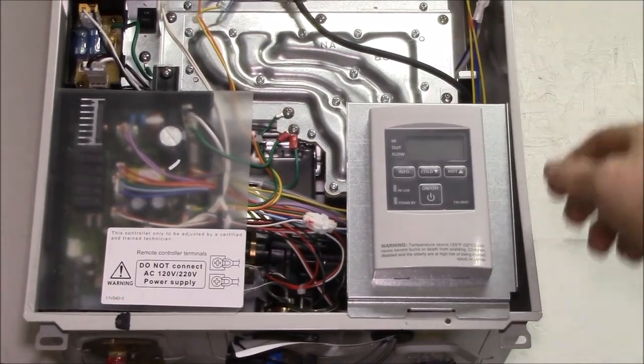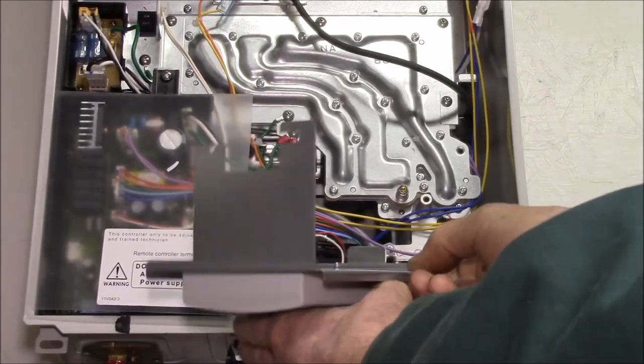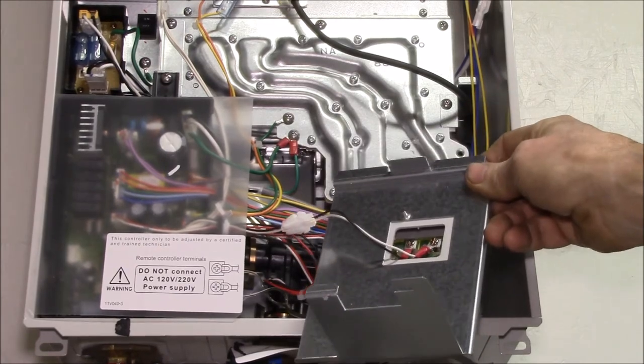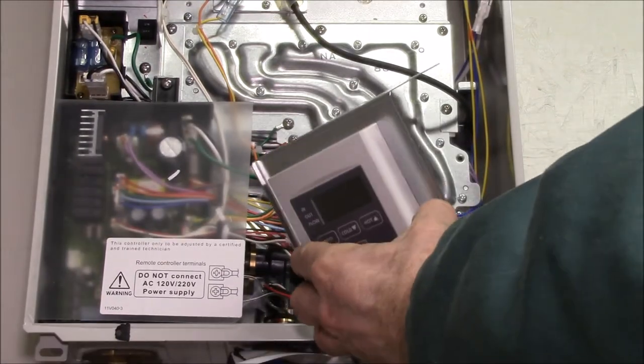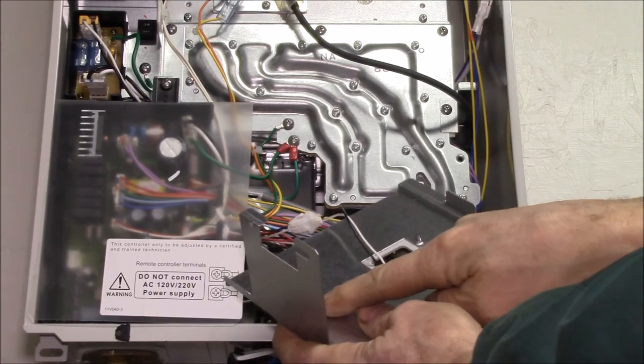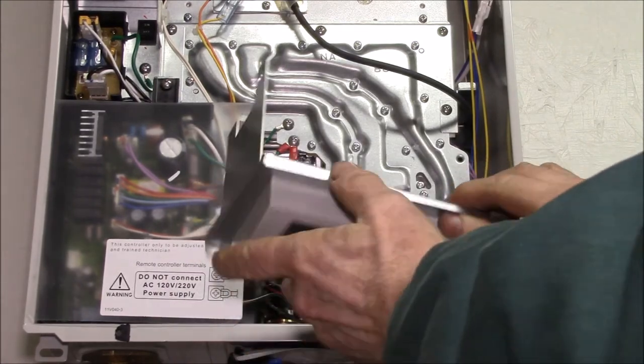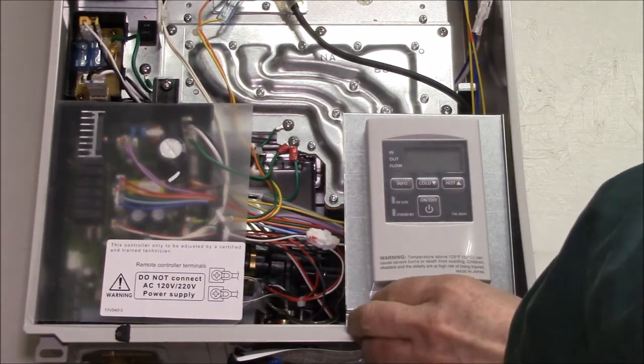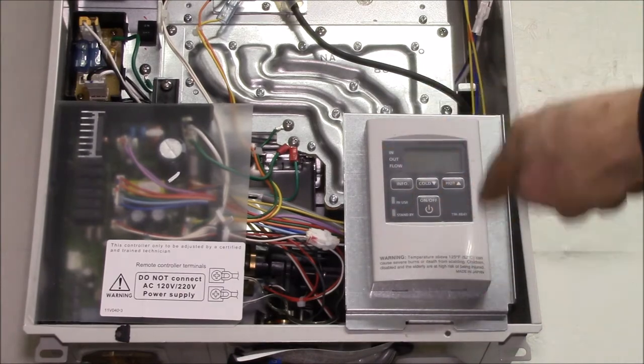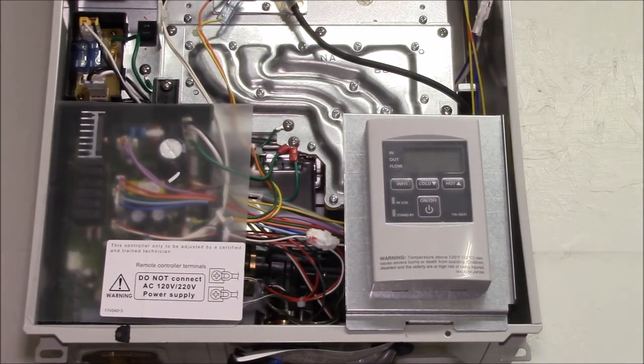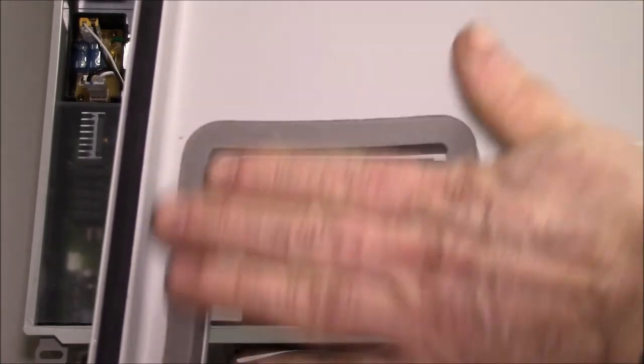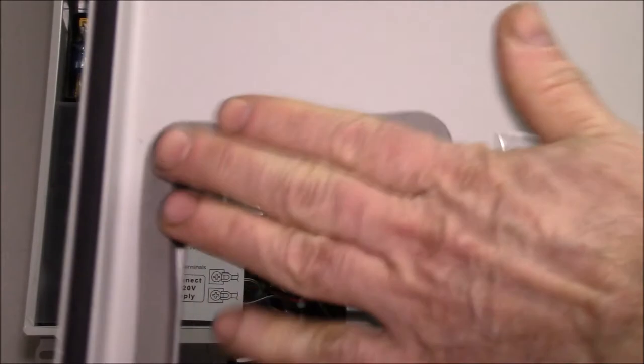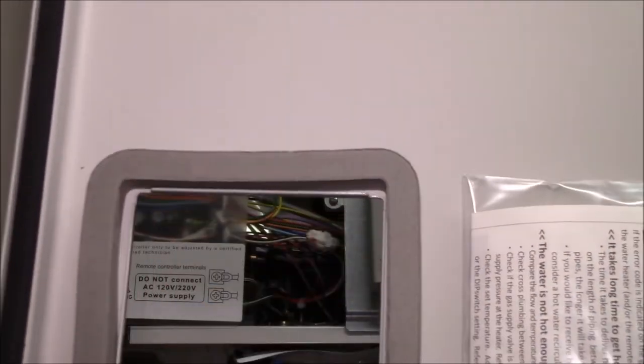Right here is your front panel controller and you can see just like the wiring diagram shows you've got two wires and a connector. Most likely you could just take out these two screws here and remote mount this someplace. The only problem you would encounter is you're going to have a hole in the front of your heater, but you could probably put a panel or piece of plastic or a piece of metal or something across there, maybe get a piece of sheet metal and just attach it to this gasket material.